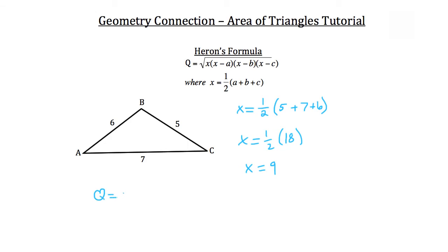So Q is equal to the square root of nine times the quantity nine minus seven, which is X minus B, times the quantity nine minus six, which is X minus C.